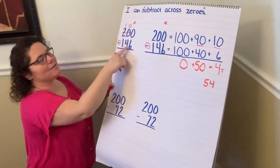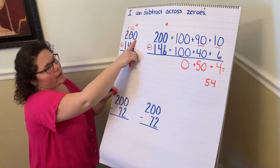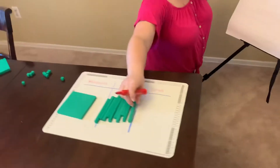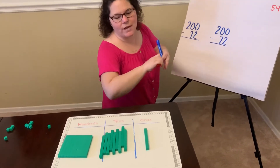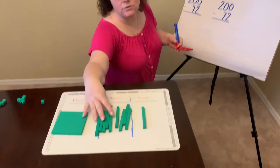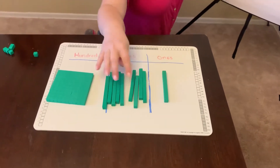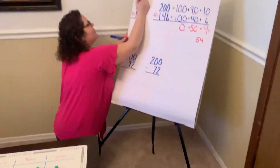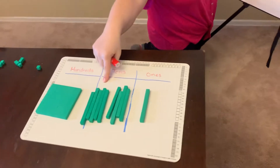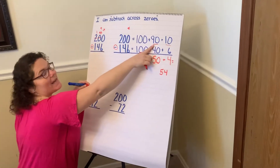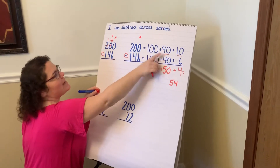But we also haven't fixed our problem yet. So now Mr. Tens is going to loan a 10 stick to Miss Ones. How many does Mr. Tens have now? Let's count them — one, two, three, four, five, six, seven, eight, nine. So now Mr. Tens only has nine 10s. Nine 10s is equal to, or the same as, 90. So this digit nine means 90. There's our 90 in our expanded form. When Miss Ones gets this 10 stick, she takes it and she ungroups it, or breaks it apart, into 10 ones.